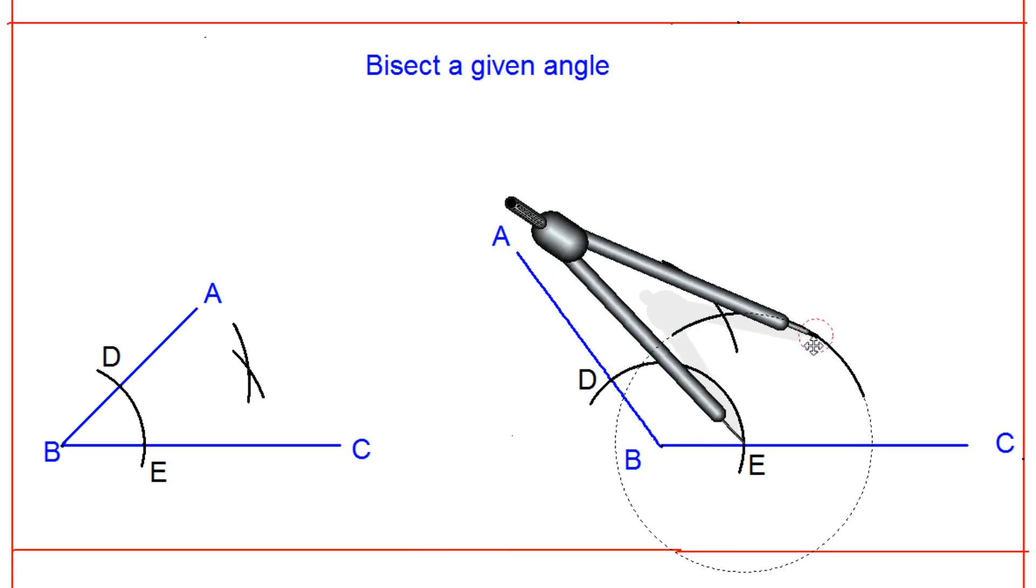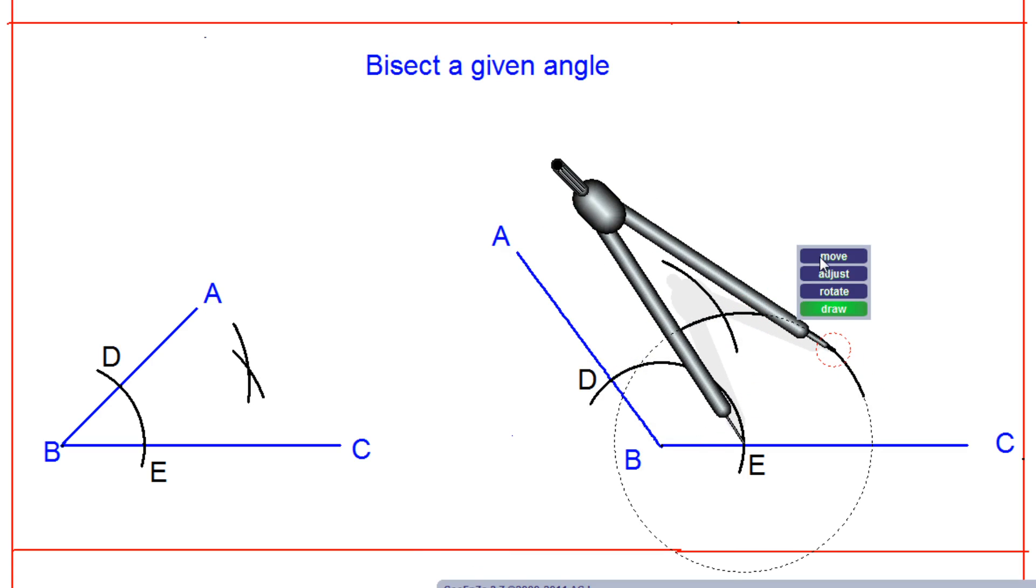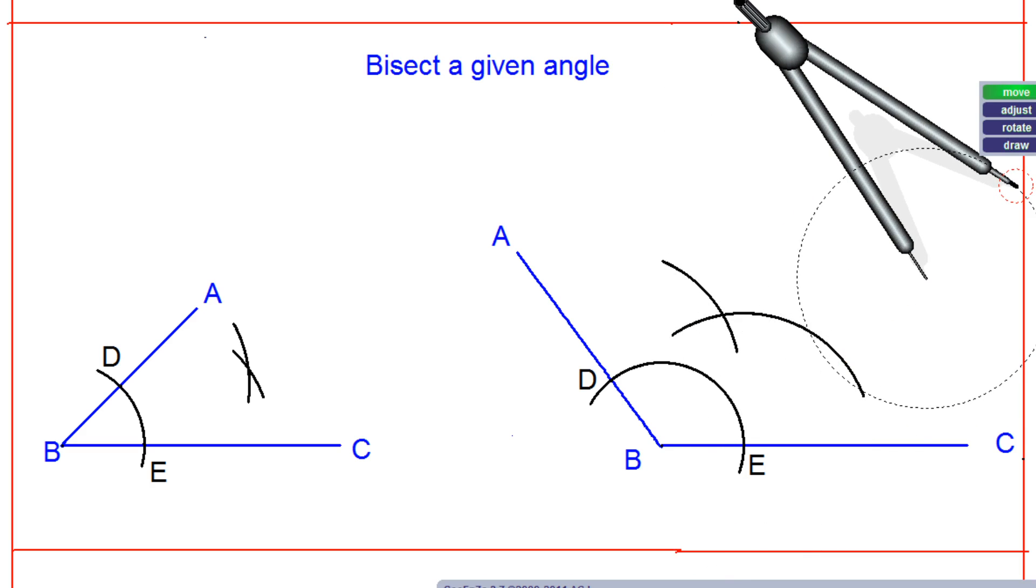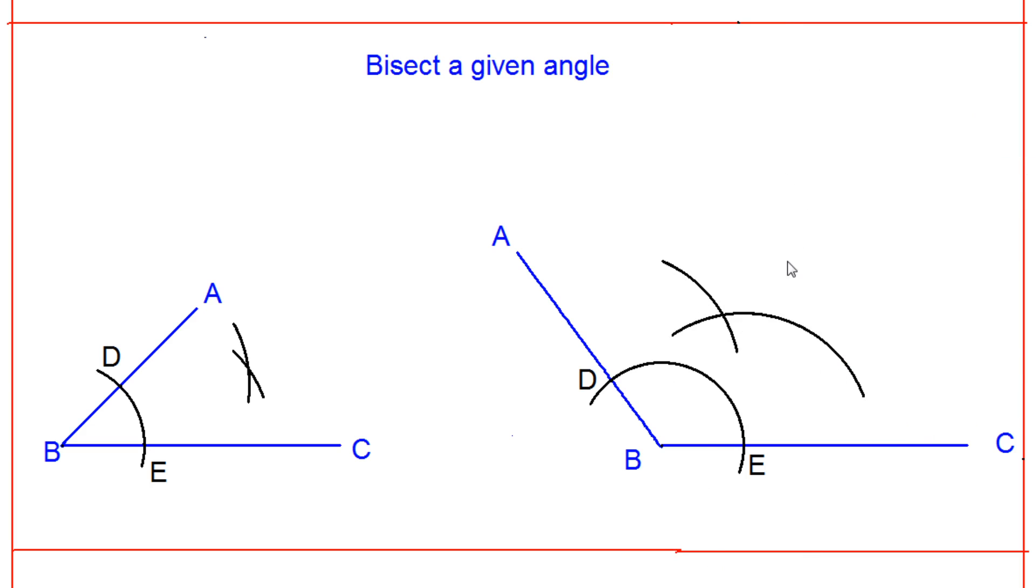So these two arcs bisecting each other, say at point F. You can draw it or you can rotate it - these two are bisecting each other at point F. So I will give the name here as F. This is point F.